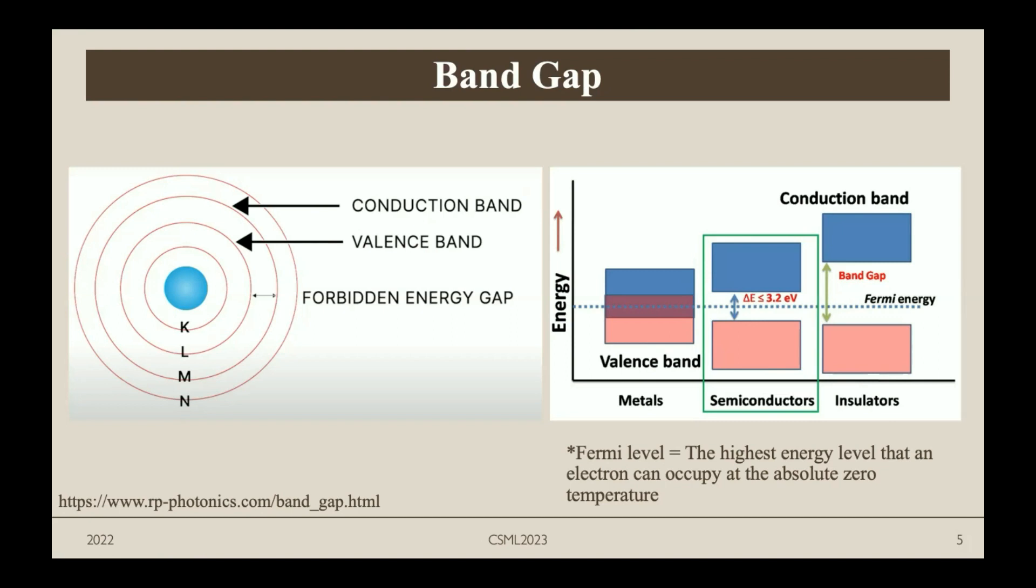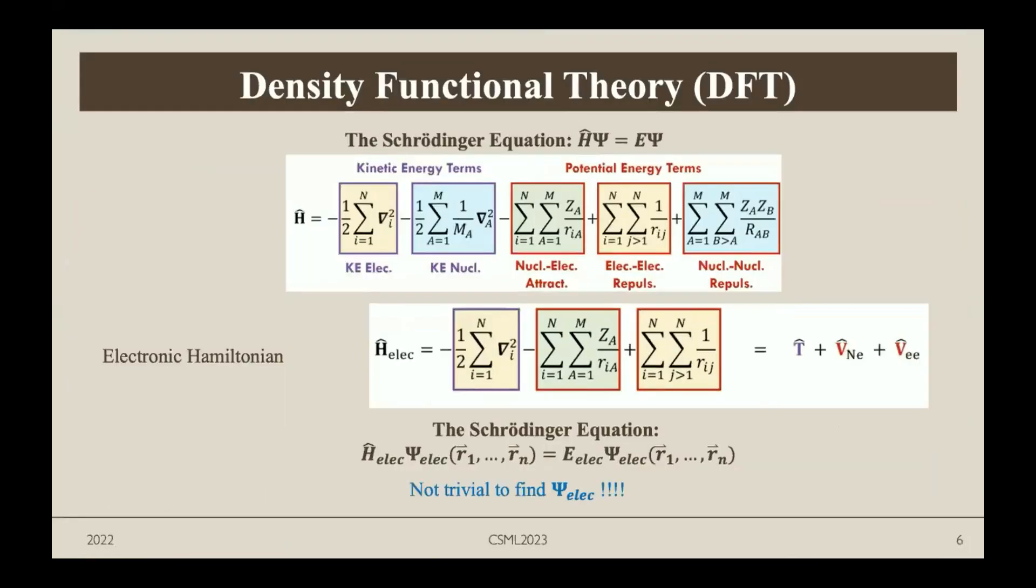Band gap is very interesting because it determines whether the material is conductive or not. Metals have overlapping band gaps, so electrons easily travel from valence to conduction band, making them good conductors. Semiconductors like germanium have a relatively larger energy gap, but with sufficient energy, electrons can travel between bands. However, insulators have such a large energy gap that no amount of energy can make the electrons travel. Band gaps are a very essential characteristic.